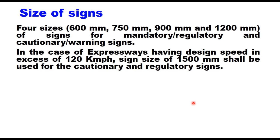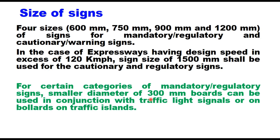The next consideration is size of signs. As a general rule there will be four sizes: 600 mm, 750 mm, 900 mm and 1200 mm for mandatory, regulatory and cautionary or warning signs. In the case of expressways having design speed in excess of 120 km per hour, a sign size of 1500 mm can be used for cautionary and regulatory signs. For certain categories of mandatory and regulatory signs, smaller diameter of 300 mm boards can be used in conjunction with traffic light signals or on bollards on traffic islands.